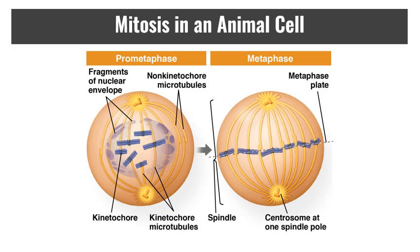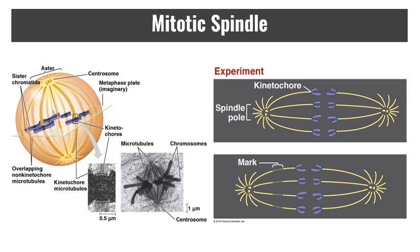In metaphase, the motor proteins in the kinetochores move the chromosomes to the middle — the metaphase plate. The cell knows where the middle is because of those non-kinetochore microtubules pushing against each other. Metaphase is unique because all chromosomes are arranged at the middle, at which point the division process begins.